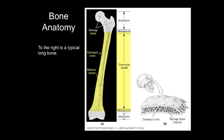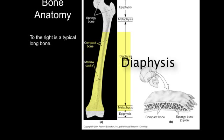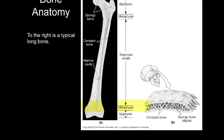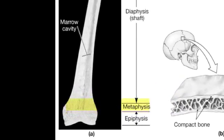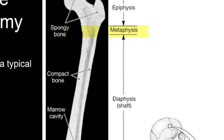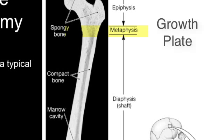The long shaft of the bone is called the diaphysis. There is an area in between the diaphysis and the epiphysis called the metaphysis. In individuals who have not reached their maximum height, the metaphysis is where the growth plate is found. The growth plate is a plate of hyaline cartilage that adds length to the bone.